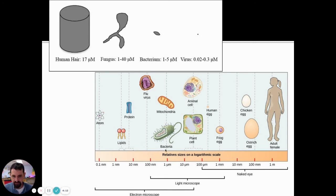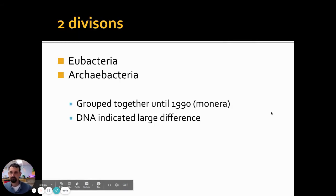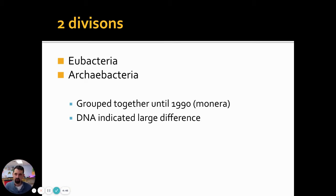When you drop down to viruses, it's another scale smaller — nanometers instead of micrometers, billionths of a meter instead of millionths. They're smaller still, and then we get down to proteins, lipids, and atoms. Keep in mind this is a logarithmic scale, so the increases are significant between each one. Bacteria are small, viruses are smaller, and that's why we can't see them.